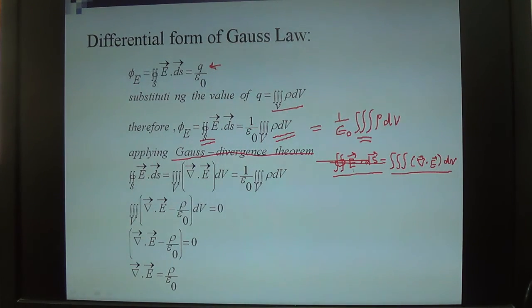You can see here that the left-hand side is equivalent to the volume integral of the divergence of that field. This value is taken from applying the Gauss divergence theorem. As a result, the right-hand side becomes 1 upon epsilon naught volume integral rho dV.